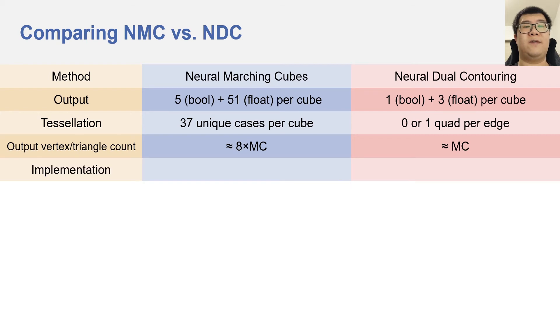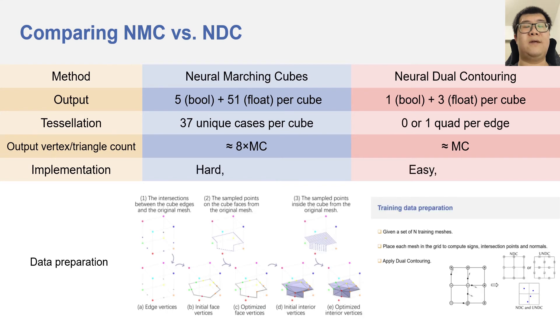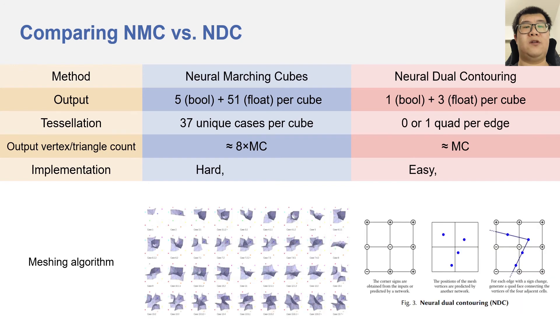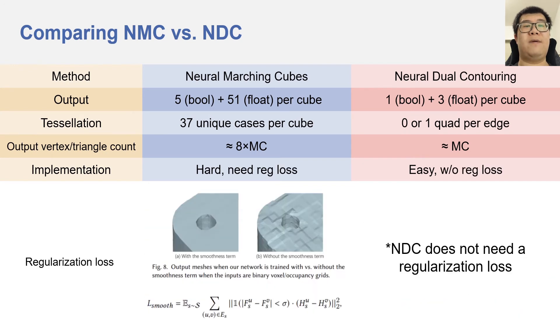Next, the implementation difficulty. As explained, NMC is much more complex than NDC, and its implementation is harder from data preparation to the meshing algorithm. Moreover, NMC requires a complex regularization loss when the input is ambiguous or noisy. Our method does not need a regularization loss.